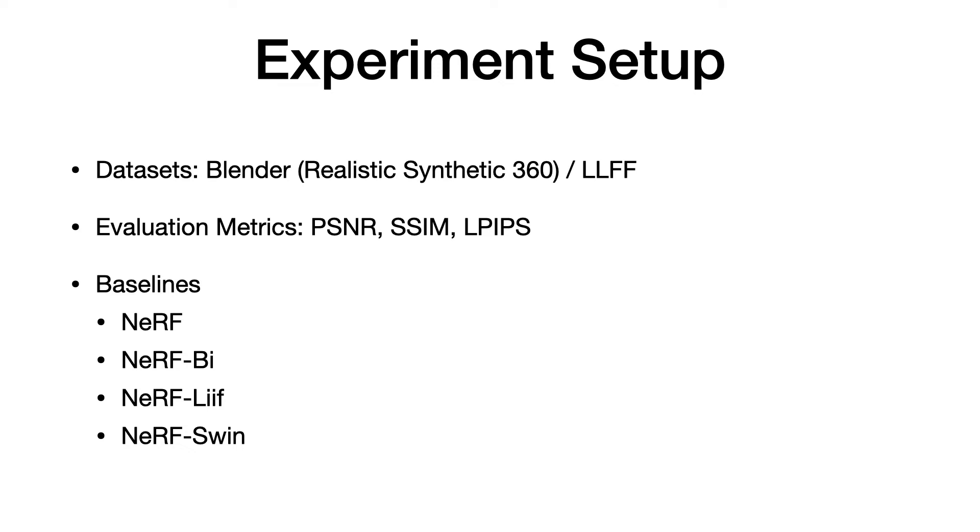The first one is vanilla NeRF that trains on low-resolution inputs and directly renders high-resolution images. The second one is NeRF-BI that uses the same trained model as in the NeRF baseline but renders low-resolution novel views and upsamples them using bicubic sampling instead.